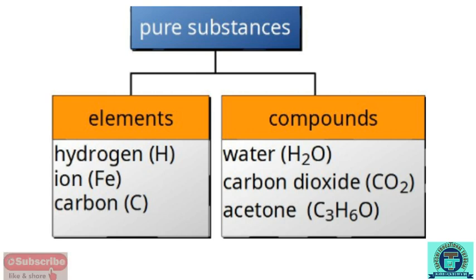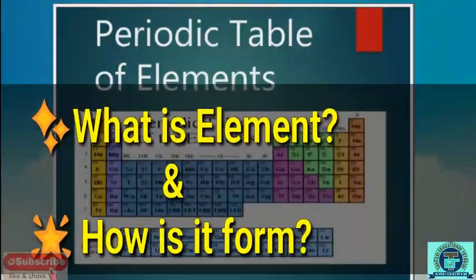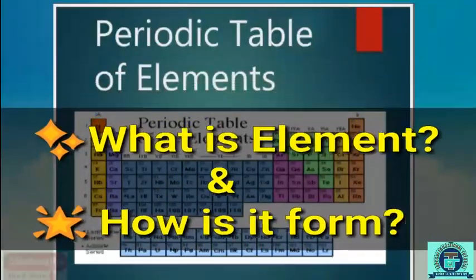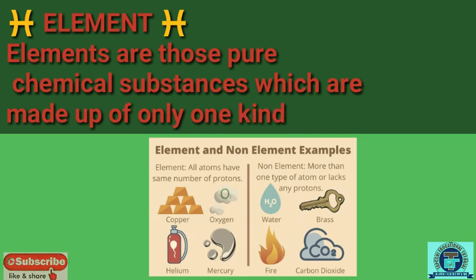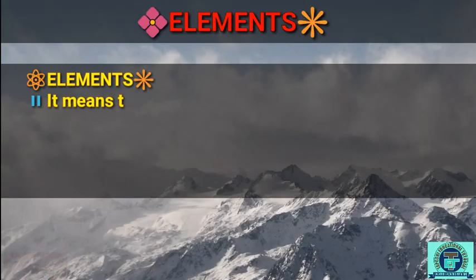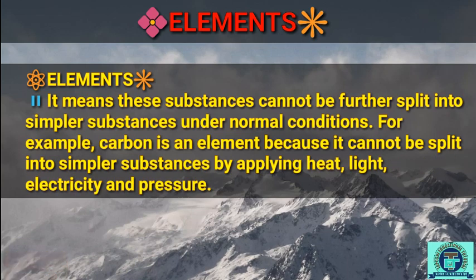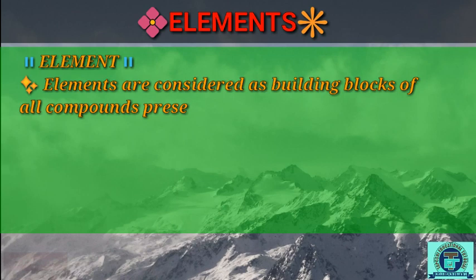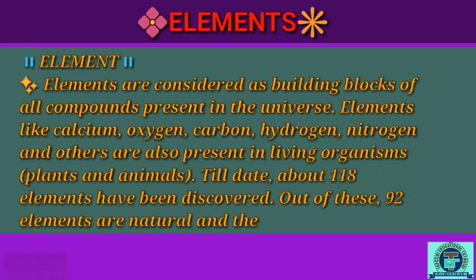Pure substances are classified into two categories: elements and compounds. Elements are those pure chemical substances which are made up of only one kind of atoms. These substances cannot be further split into simpler substances under normal conditions. For example, carbon is an element because it cannot be split into simpler substances by applying heat, light, electricity, or pressure.